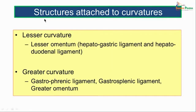To summarize the structures attached to the two curvatures: attached to the lesser curvature is the lesser omentum, having two parts — the hepatogastric ligament and the hepatoduodenal ligament. Attached to the greater curvature are the gastrophrenic ligament, the gastrosplenic ligament, and the greater omentum.